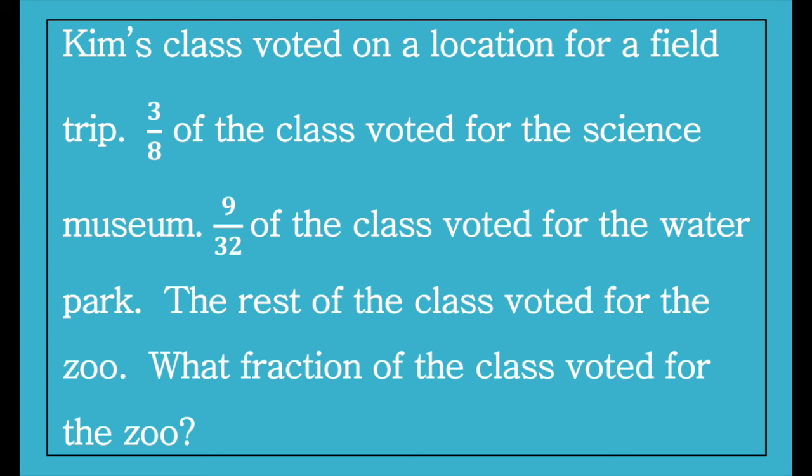Kim's class voted on a location for a field trip. Three-eighths of the class voted for the science museum. Nine thirty-seconds of the class voted for the water park. The rest of the class voted for the zoo. What fraction of the class voted for the zoo?